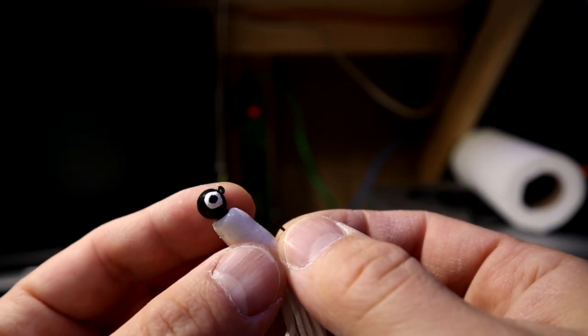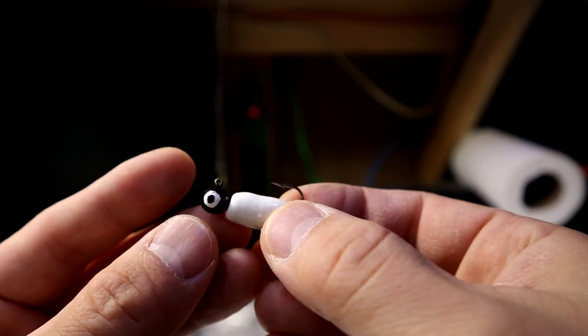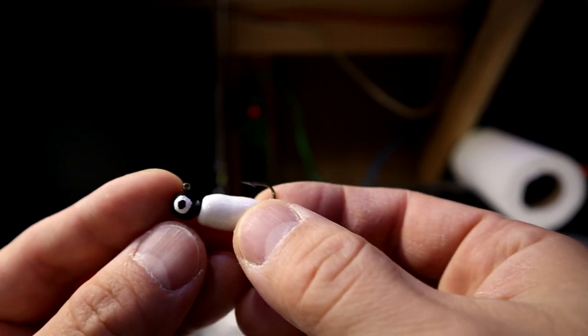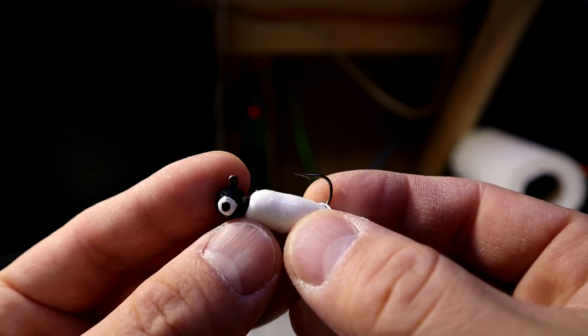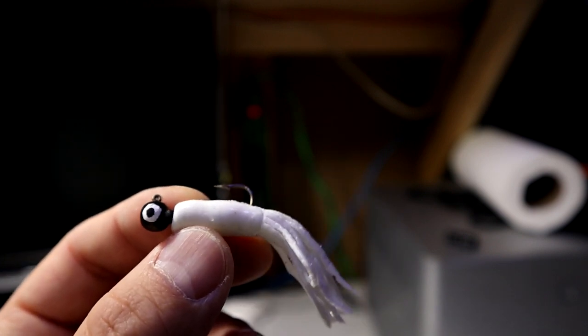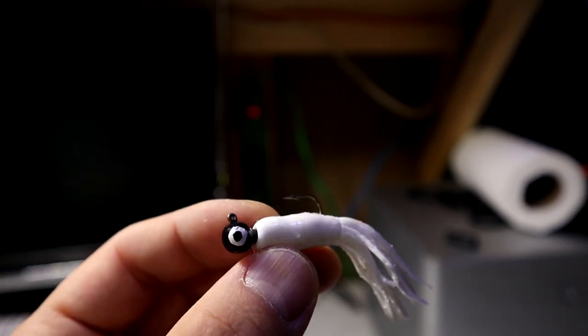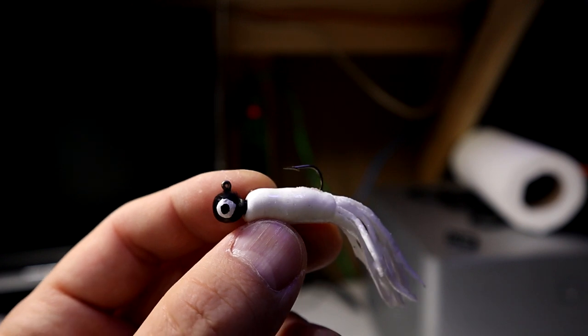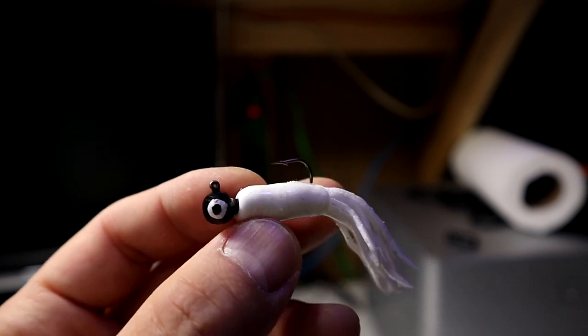So this is the finished product of another jig head that I repaired. And yeah, I think it looks pretty good. Nice, simple technique. It actually holds up fairly well underneath the bites of different fish. I find it only takes between five to ten minutes, kind of even with drying time. Easy to do and very simple.